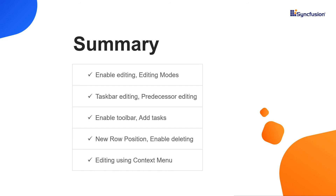That's everything. Let me summarize the main points covered. I explained the steps to configure editing and discussed the available editing modes, then explained how to edit tasks using the taskbar and how to edit predecessors. I demonstrated how to enable the toolbar and perform add operations with new row positions. Finally, I showed how to enable deleting and how to edit using the context menu in the Gantt chart. You can download this working example from the GitHub link in the video description below. If you found this video useful, click the like button and subscribe to our channel to get notifications about new videos. Thanks for watching.